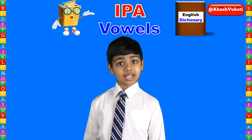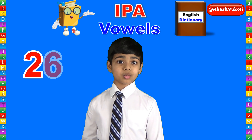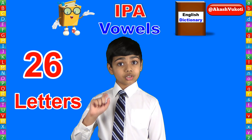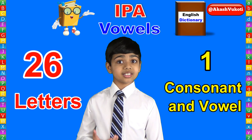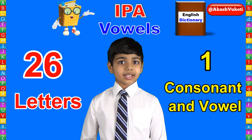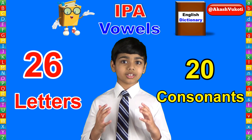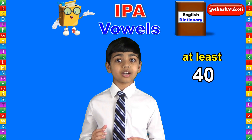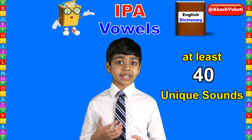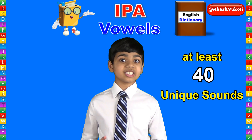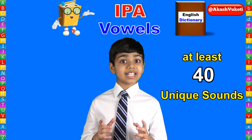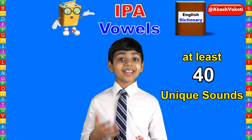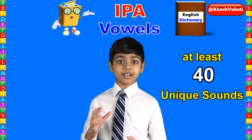Coming back to the IPA — the English alphabet has 26 letters. Five of them are vowels, one is considered both a consonant and a vowel (that is 'y'), and the remaining 20 are consonants. However, there are at least 40 unique sounds made out of these vowels — both short and long — plus diphthongs and consonant sounds. On top of these 40 phonetic sounds, there are a few more used only in British English and a couple others used only in American English.